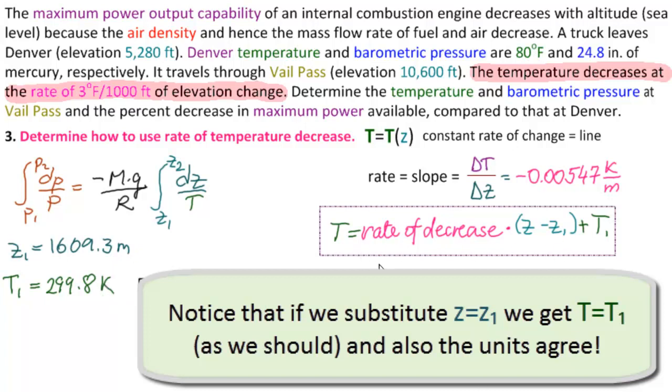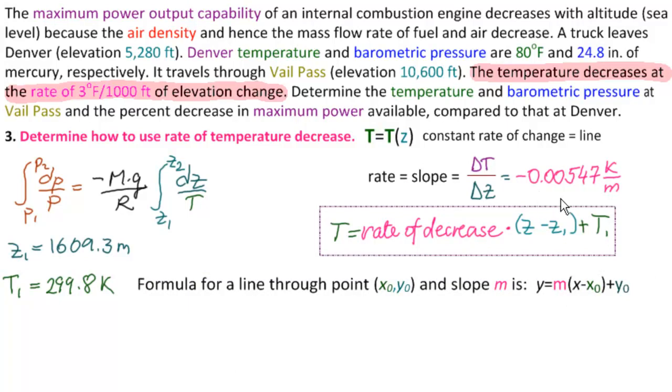And I always like to check the units. Rate of decrease, what is it in? Kelvin per meter. z minus z1, what is that? That's meters. The meters cancel. I have Kelvin. This is Kelvin. This is Kelvin. The units check. So this is our formula, and we substitute this number for the rate of decrease. We substitute z1 here and t1 here. So t equals minus 0.00547, z minus 1609.3 plus 299.8.